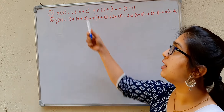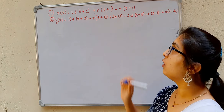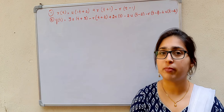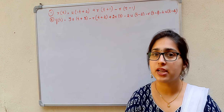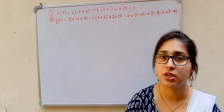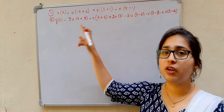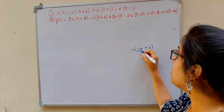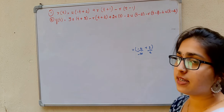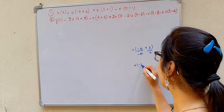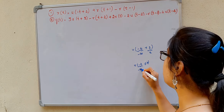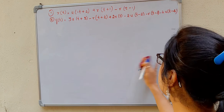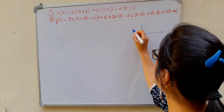First, we consider x(t) = u(-t+2) + r(t+1) - r(t-1). Now, u(-t+2) is of the form u(-t ± t₀), which I explained when discussing the step function: this function starts from minus infinity and ends at t₀. So for u(-t+2), it starts at minus infinity and ends at 2. If you have u(-t-3), it starts from minus infinity and ends at minus 3.